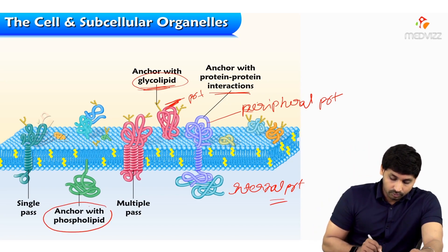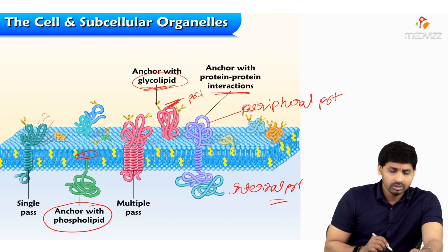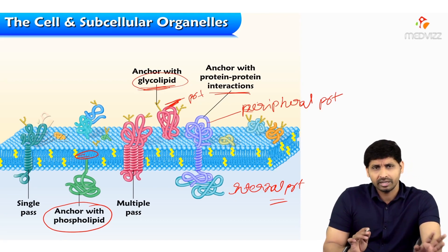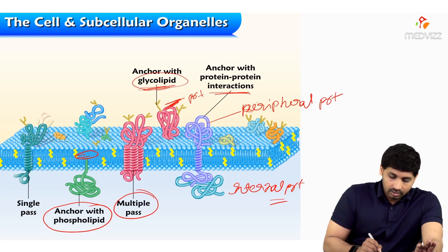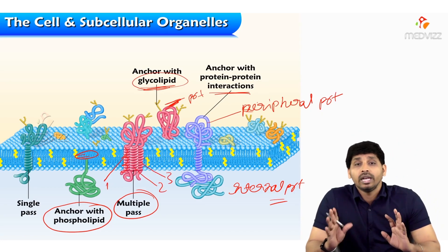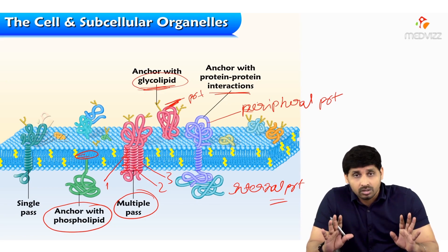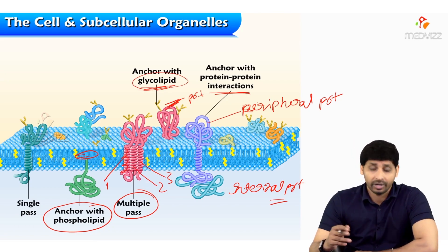Here this protein is anchored with phospholipid — you can see this is the phospholipid. This protein is anchored with phospholipid as a single one with no association; only carbohydrate is present — that is called glycoprotein. And then there is the multiple pass configuration: one, two, three — multiple coilings of the protein form multiple passes. This is how proteins are wound up in the cell membrane.